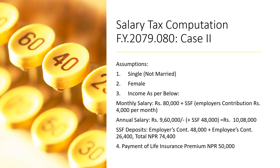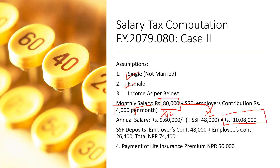Here we will discuss a case where you are a female, single employee. Your monthly income is eighty thousand, plus four thousand as employer contribution to SSF. Your annual salary becomes nine lakh sixty thousand, and your annual SSF employer contribution is forty-eight thousand, making your annual income ten lakh eight thousand. The SSF contribution is forty-eight thousand from the employer and twenty-six thousand four hundred from the employee, totaling seventy-four thousand four hundred. Annual life insurance paid is fifty thousand.